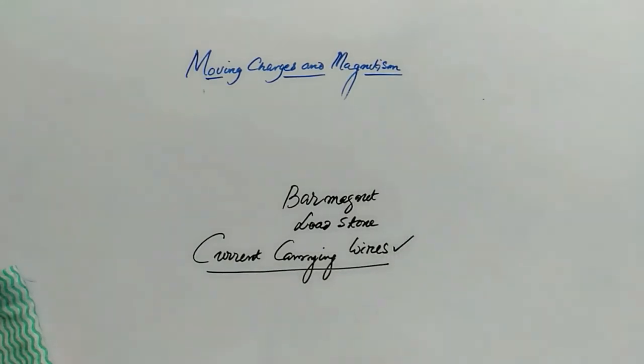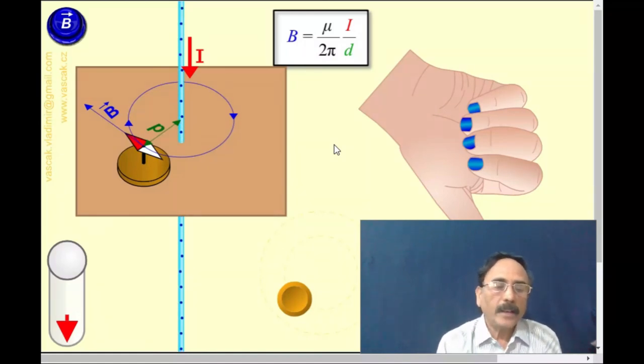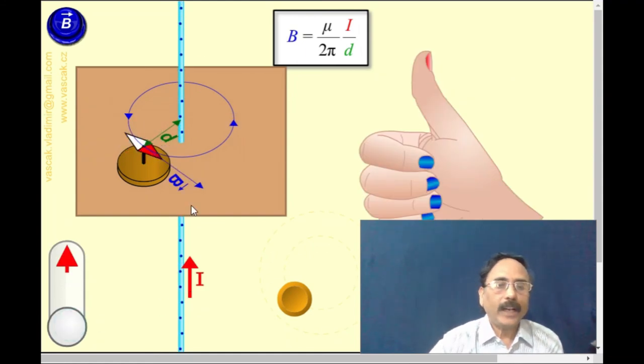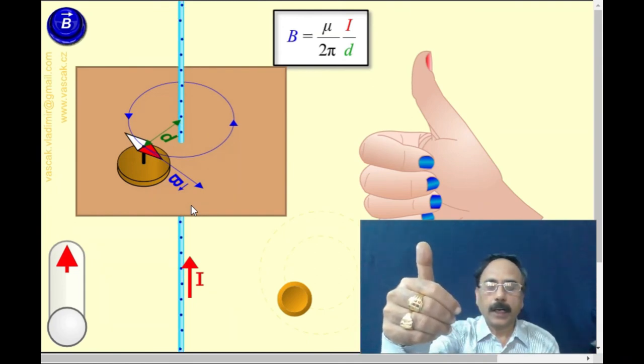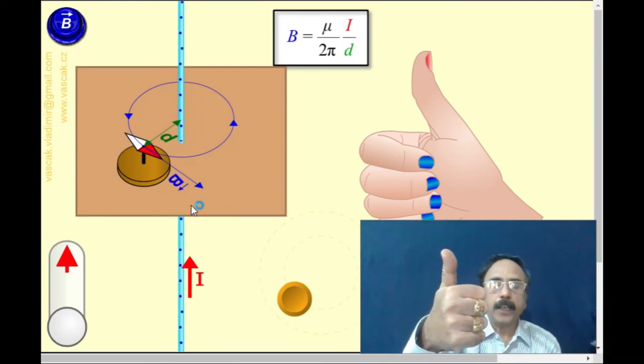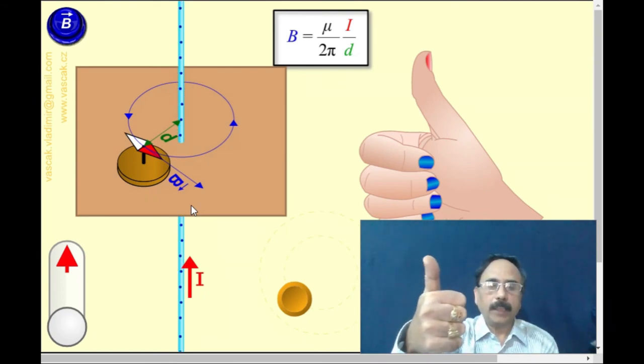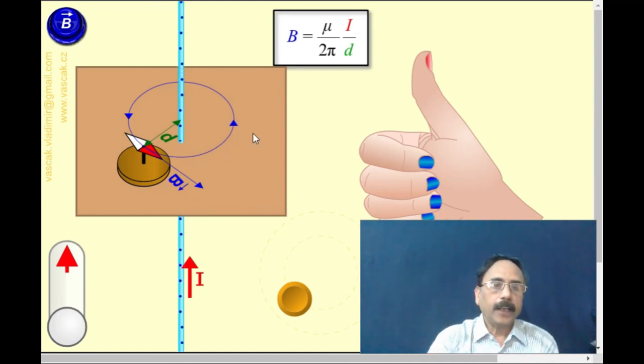So, this is the new source of magnetic field. Let us watch the animation of the Ampere right-hand rule. So, in this, when the current is in upward direction, we have to keep the thumb in the direction of current and then remaining fingers will show the field lines. So, here the field lines are in the counter-clockwise direction when the current is in upward direction.